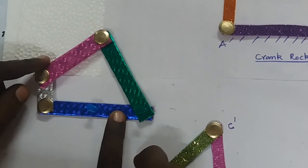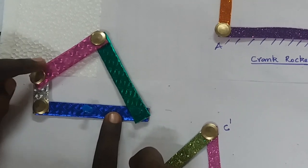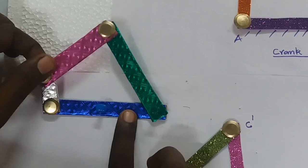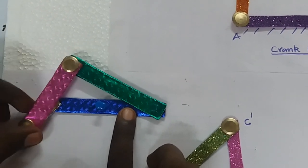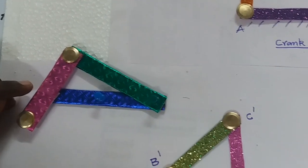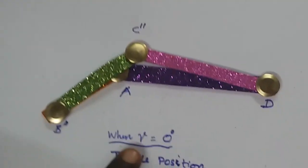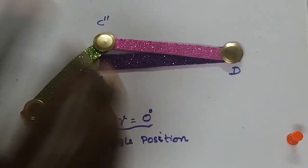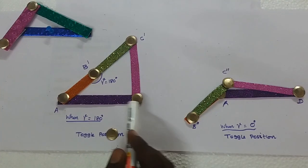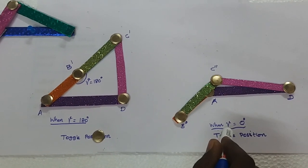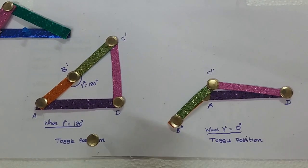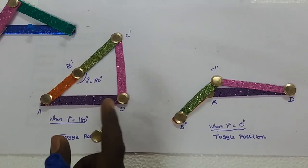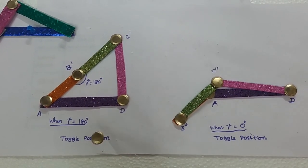The second condition is when gamma is equal to 0 degrees. The angle between the crank and the coupler is 0 — this is the gamma equals 0 toggle position. Both gamma equal to 180 degrees and gamma equal to 0 degrees are toggle positions. At these extreme positions, only a small input torque can overcome a large output torque or load. The extreme positions of the linkage are known as toggle positions.